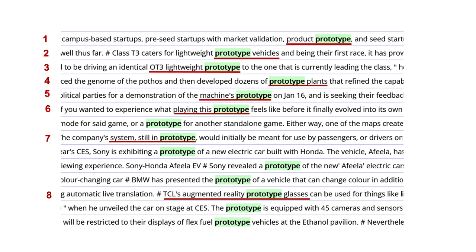In lines four through eight, we see prototype used to mean the first of some other things. In line four, it is a prototype plant — many a new genetic variety of a plant created by a biologist. In line five, it is a machine; we don't know what kind. In line six, it looks like it is a game because it says playing this prototype — it is probably a new virtual game. In line seven, it is a company system, and here we see prototype used in a different way to emphasize the condition or state of something.